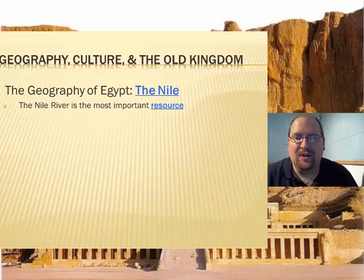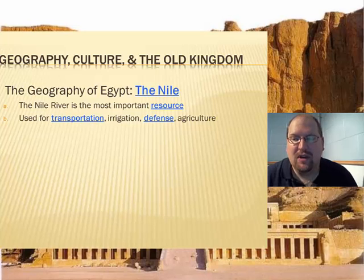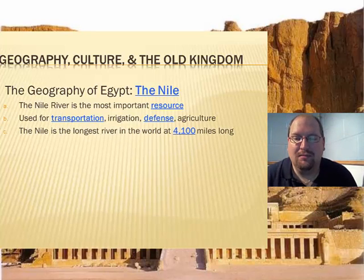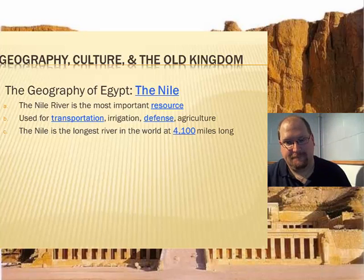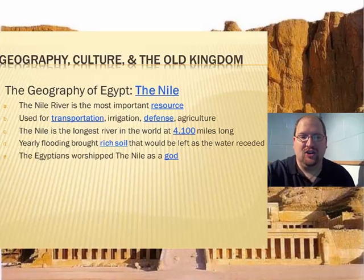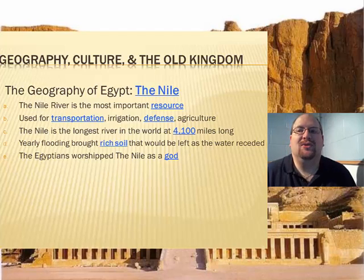The Nile is the most important resource in Egypt and the surrounding areas. Besides being used for transportation, irrigation, and agriculture, it was also useful as a type of natural defense line — it was wide and deep enough during most parts of the year to prevent enemies from crossing it. Most geographers say the Nile is the longest river in the world, spanning about 4,100 miles long. Every year the Nile would flood, bringing with it rich soil left behind once the water receded. Egyptians worshipped the Nile as a god — after all, if you rely on something to survive, wouldn't it be smart to treat it with the respect of a god?